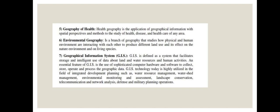Environmental geography is a branch that studies how the physical and human environment interact with each other to produce different land use and its effects on the natural environment and living species. GIS — geographical information system — is defined as a system that facilitates storage and intelligent use of data about land and water resources and human activities. It provides information, data, and facilities about land, water resources, and all human activities.